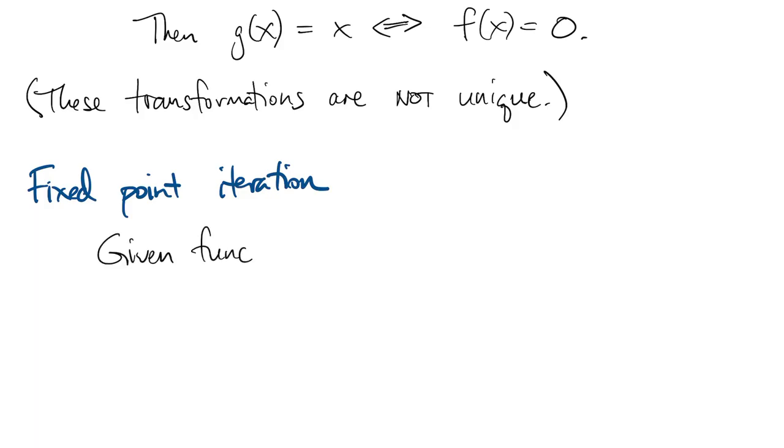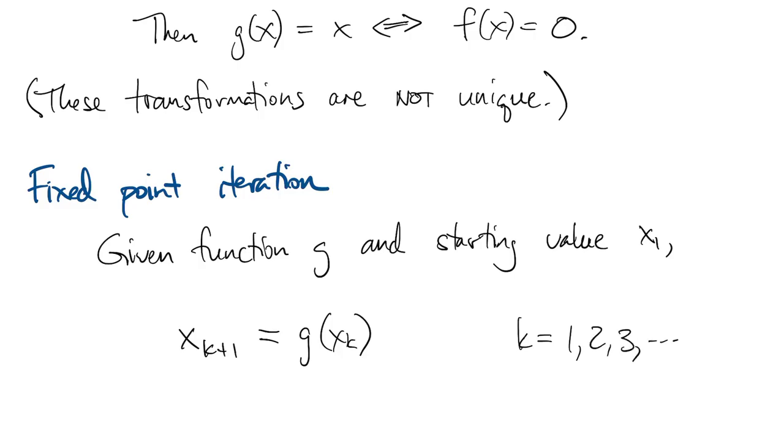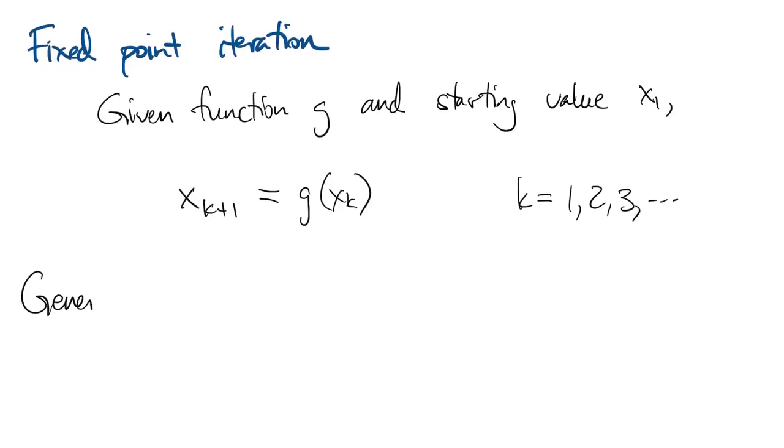So the fixed point iteration is a simple way to try to solve the fixed point problem. You're given a function and a starting value x1, and you simply define the next value of x as the value of g at the current value of x. So we can use this to generate a sequence, x1, x2, and so on.